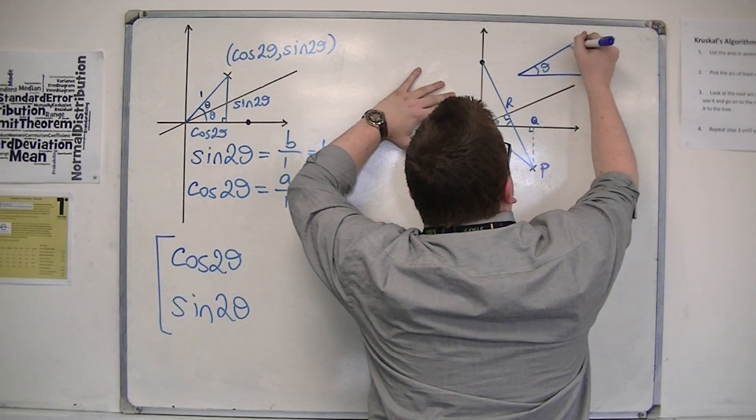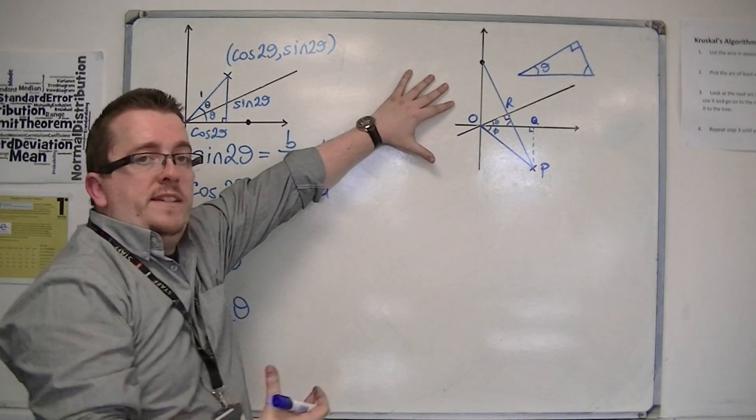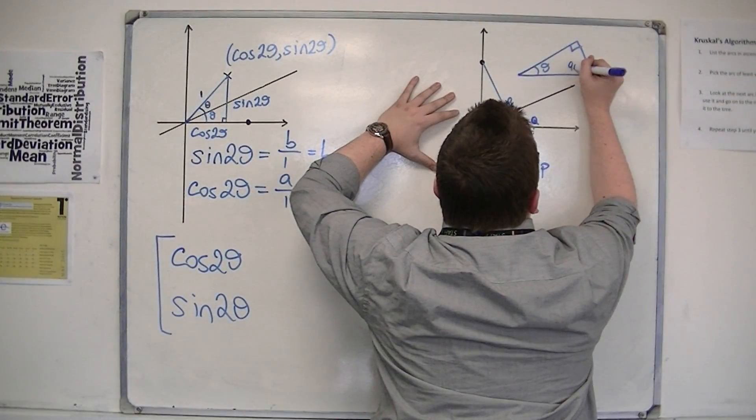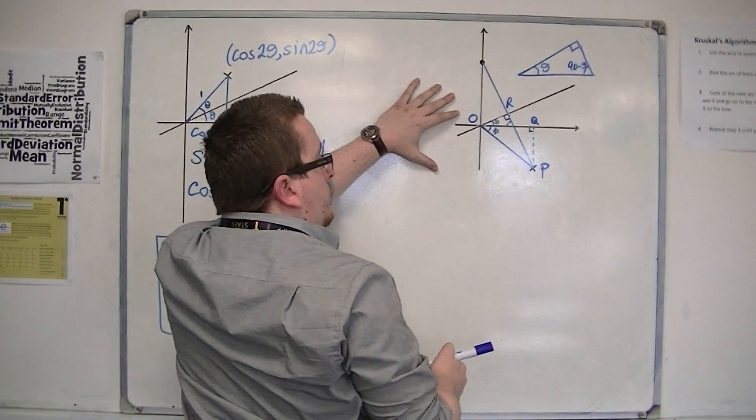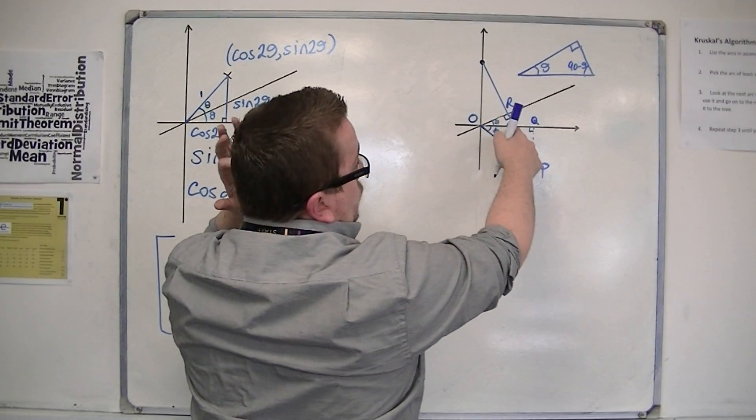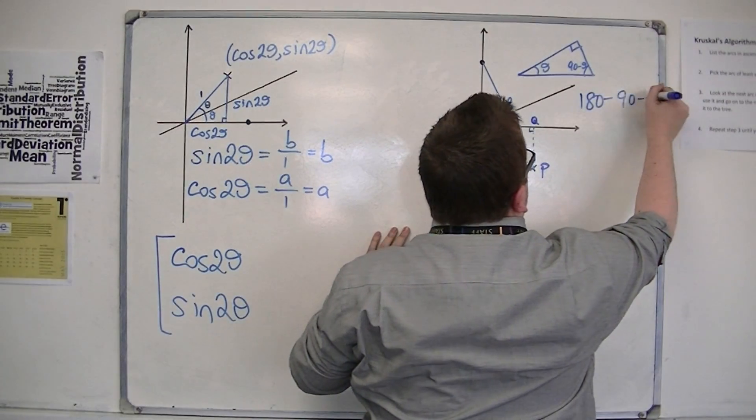This is theta. That's 90 degrees. I want that angle there. 180 take away the 90 is 90. Take away the theta, so that's 90 minus theta. That's that angle there.